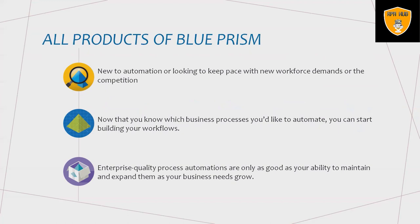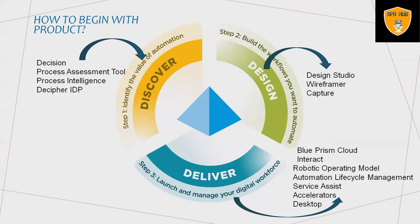When it comes to Blue Prism products, they have a massive product range divided into three parts: Discover, Design, and Deliver. First is Decision — take automated decision making to the next level with machine learning. You can create explainable ML-based processes in hours, automating human-like decisions with minimal effort. Second is Process Assessment Tool — once you identify a process to automate, Blue Prism Capture helps create the Process Definition Document (PDD) in just a few clicks.